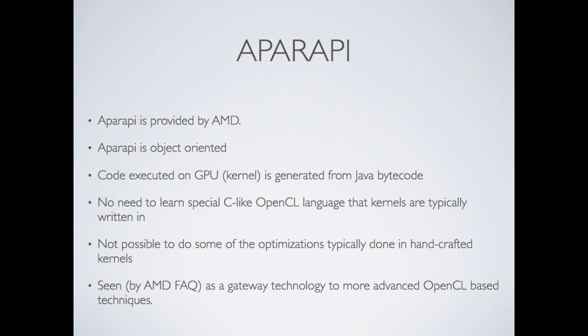Aparapi is an API provided by AMD. It's object-oriented, but unlike all the others we've looked at, the GPU kernel code is generated from Java bytecode, so you don't need to learn the low-level C-like OpenCL language. This may seem great at first; however, you're not able to perform a lot of the low-level optimizations that are so often necessary in an OpenCL program. You'll need to structure your Java code to use arrays and be very C-like, and you can't use regular Java features like opening a database connection, since it is code running on the embedded system that is the GPU.